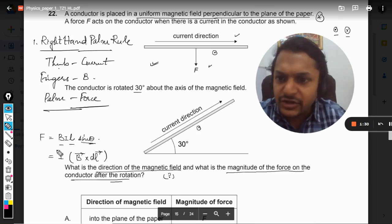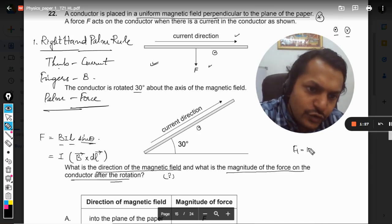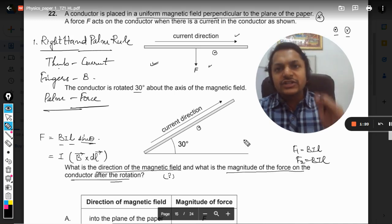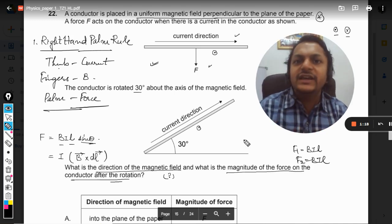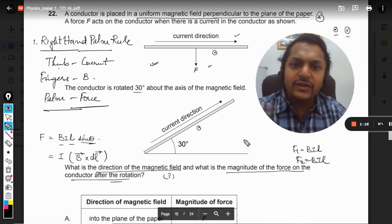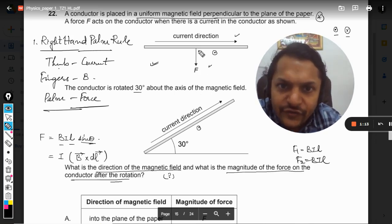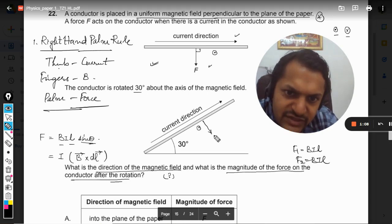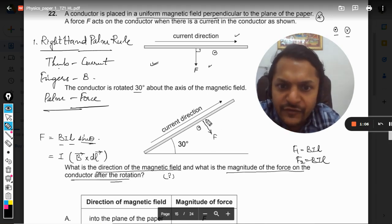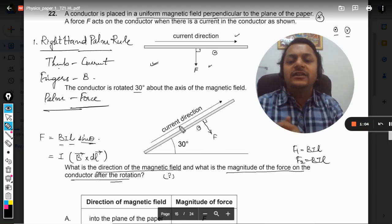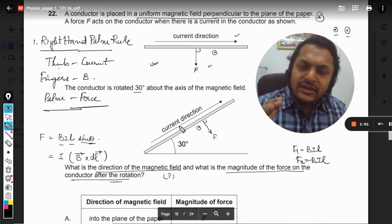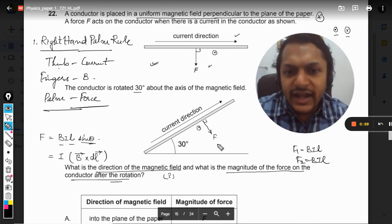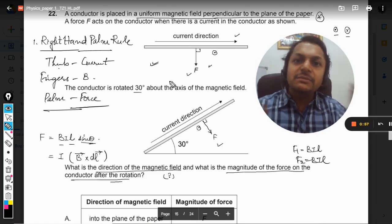So I can say that the first force is coming out to be BIL and the second force is also coming out to be equal to BIL. So the forces will be same, but the only thing is that the direction of force will be different. Here the direction of force is perpendicular to the length, and here also the force experienced by the wire will be right-angled at the wire. So it will be making 90 degrees on the wire. So the direction of the force has changed, but the magnitude of the force does not change.